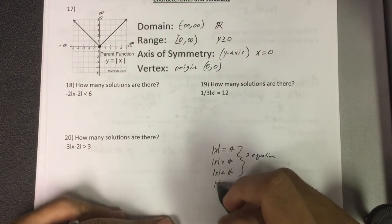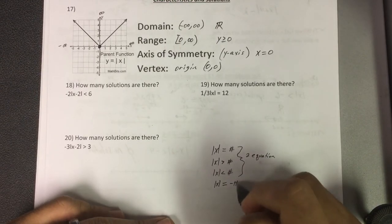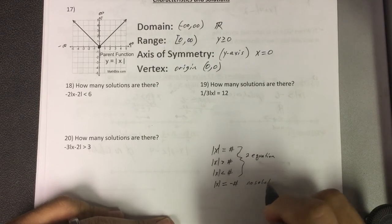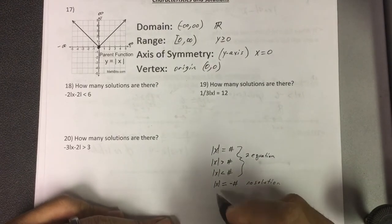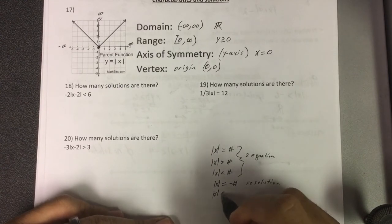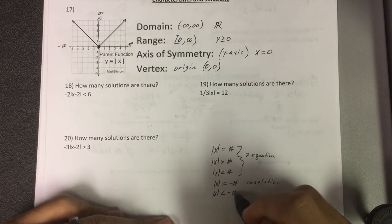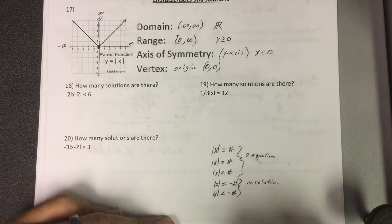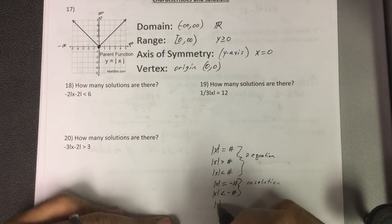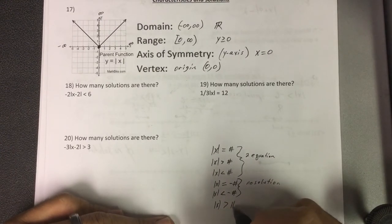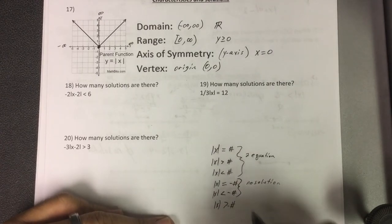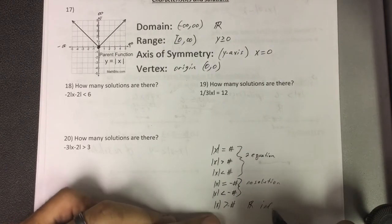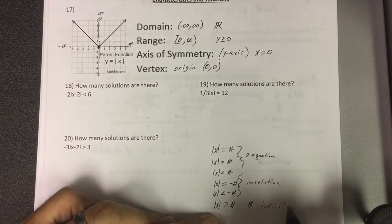Now, if they tell me absolute value of x equals a negative number, that's no solution. Also, if they say the absolute value of x is less than a negative number, that's no solution. We can never be smaller than a negative number. And then finally, the absolute value of x is greater than a negative number. That's all real numbers, or what we call infinite solutions.